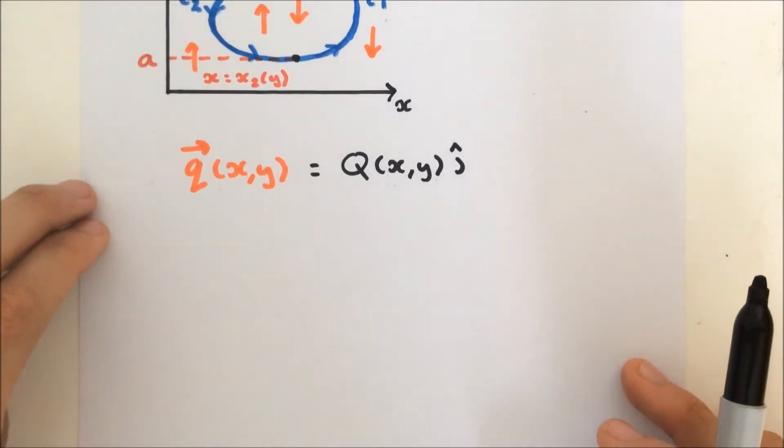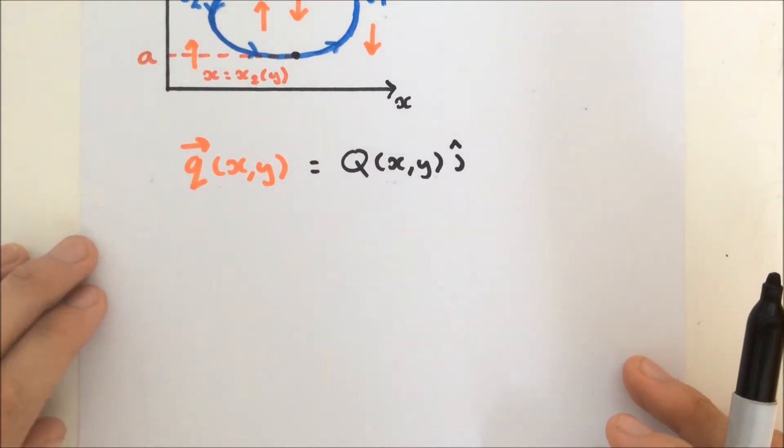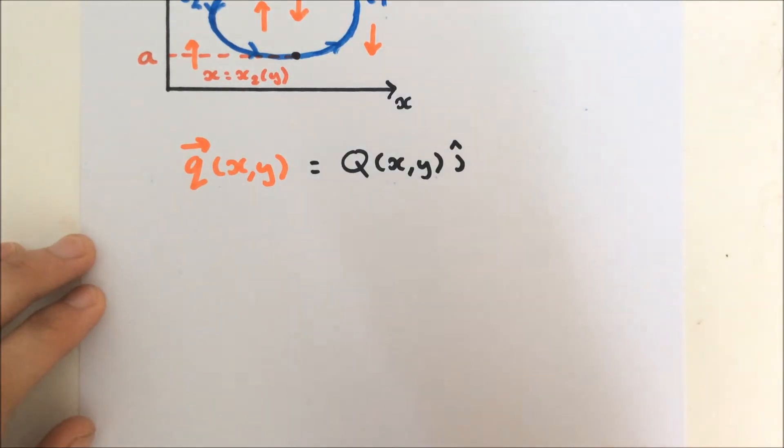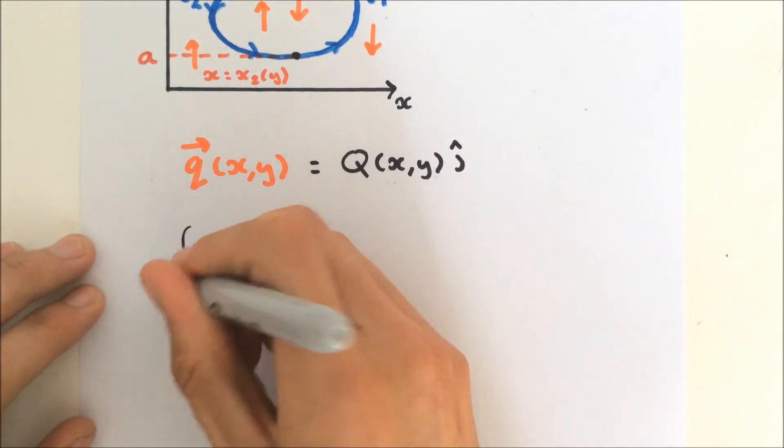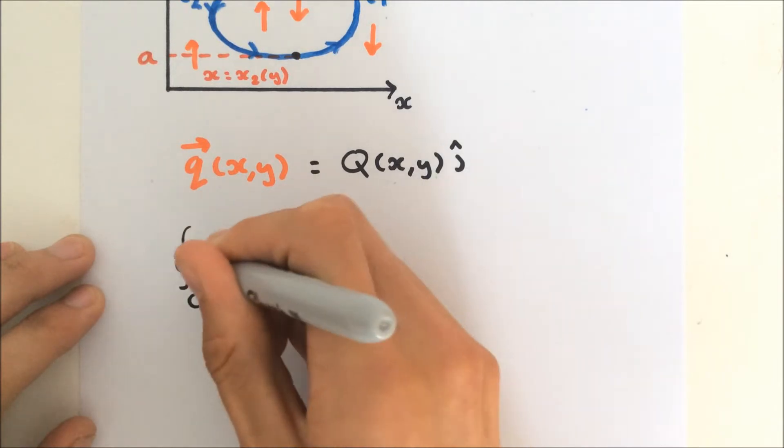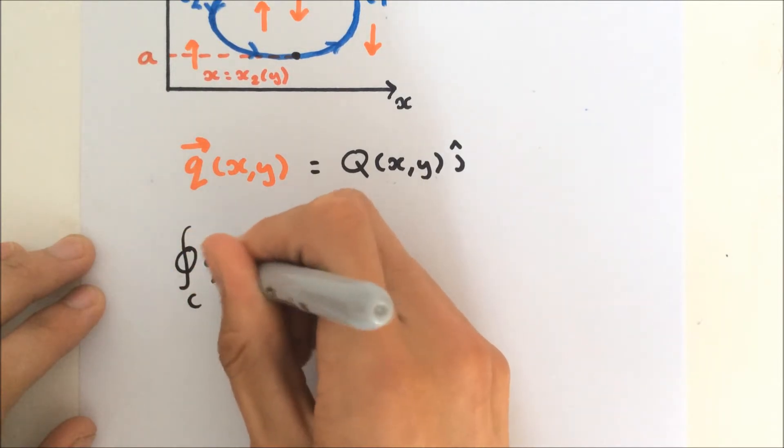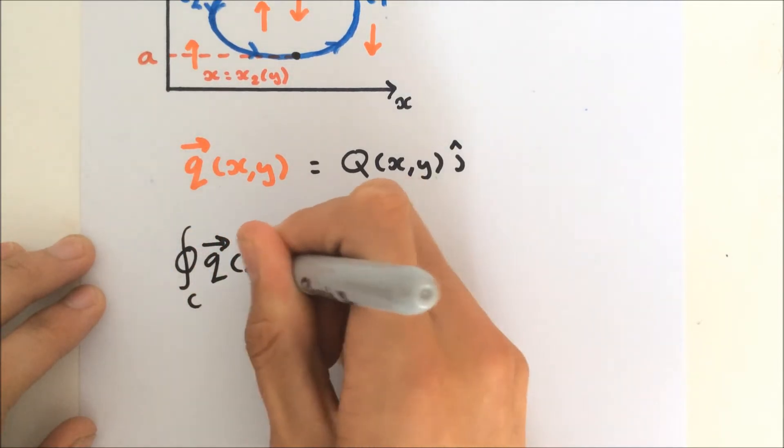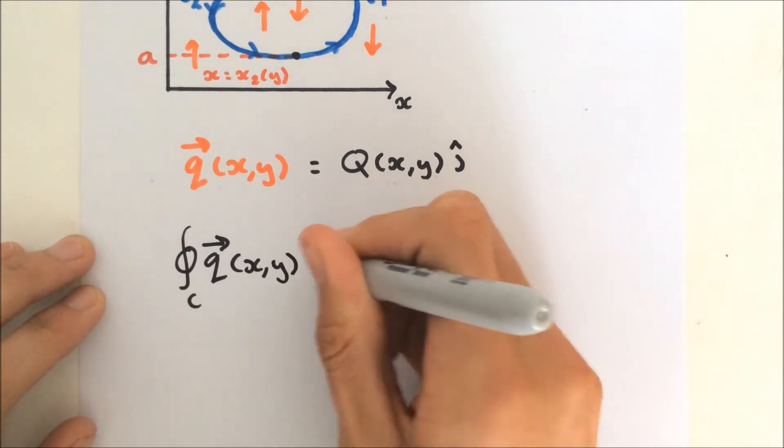So we're going to do the exact same things we did in the last video. So we're going to compute the line integral of our vector field, so along a curve C, so that's Q of xy, and we dot that with dr.